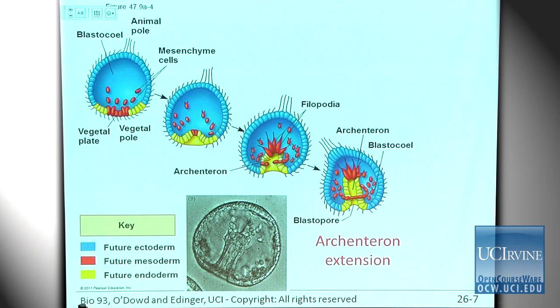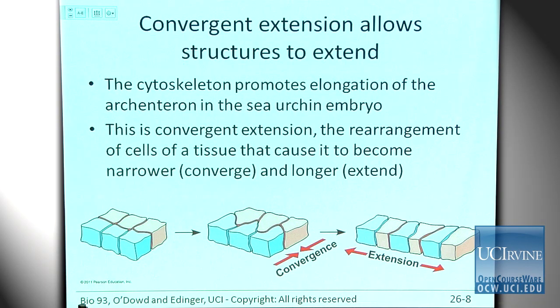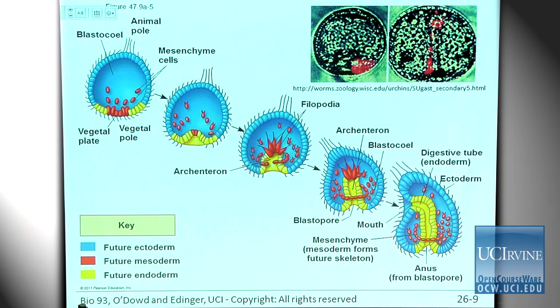The extension of the archenteron happens through a process called convergent extension. The cytoskeleton of these cells changes its arrangement, causing cells to interdigitate — it's like if a mob of 100 students waiting outside were forced into a single file line. That single file line is much longer. The cells rearrange into a single file, which makes the archenteron longer. They don't need to proliferate or stretch — just rearrange to reach the other side of the blastocoel.